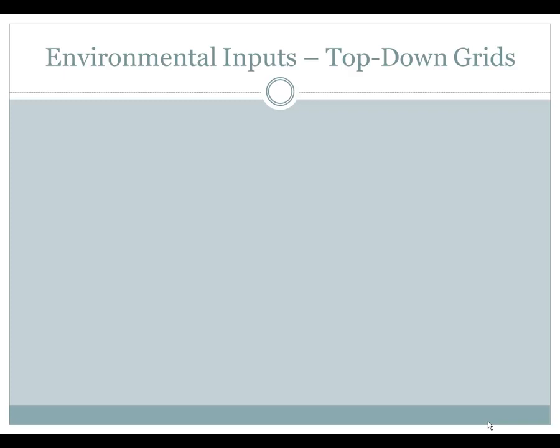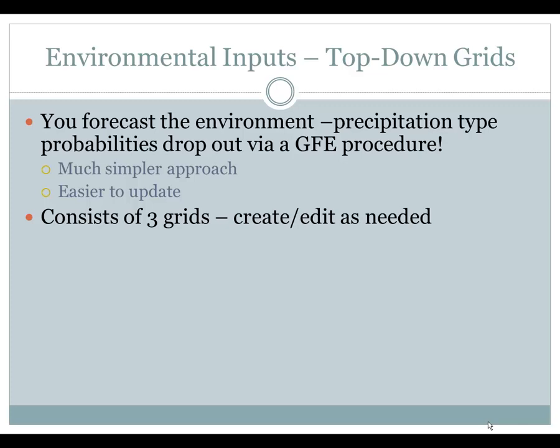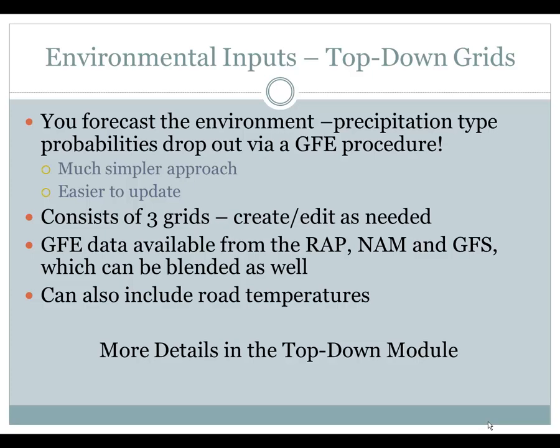Next we'll jump to the top-down group. The top-down idea here is basically you forecast the environment and the precipitation type probabilities will drop out. It's a much simpler approach and a lot easier to update when you're going through mixed precipitation type weather. Most of it consists of three grids that you just edit as needed. You have data from the RAP, the NAM, and the GFS — you can blend them as well, and you're not restricted to one model. You also have the ability to manipulate these grids to fit your meteorological situation, and you can include road temperatures if you're dealing with icing on roads during a typical rain event. More details on the top-down grids can be found in the top-down module.